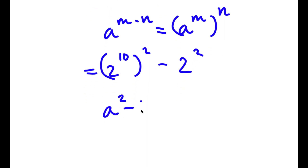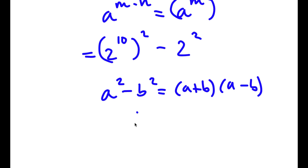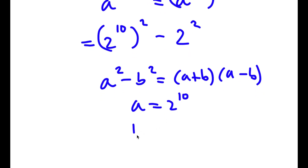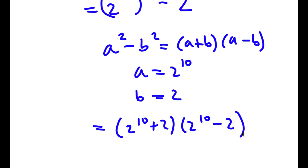If I have something in the form a squared minus b squared, this is equal to a plus b times a minus b. So in this case, a is 2 to the power of 10 and b is 2. So I have 2 to the power of 10 plus 2 times 2 to the power of 10 minus 2.